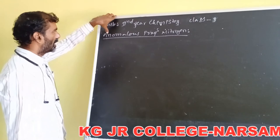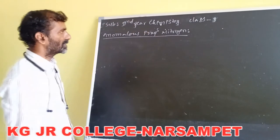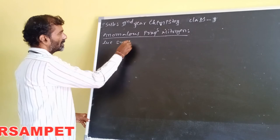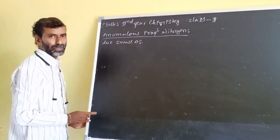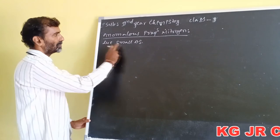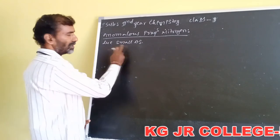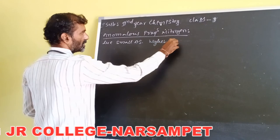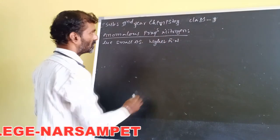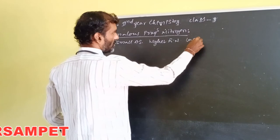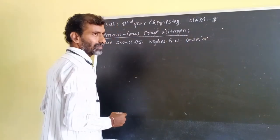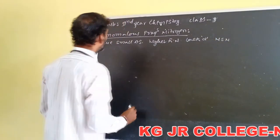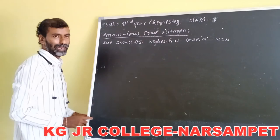Next, anomalous properties of nitrogen. Nitrogen shows anomalous properties due to small atomic size, higher electronegativity, lack of d-orbitals, and tendency to form multiple bonds, that is pi bonds. All these characteristics cause nitrogen to show anomalous properties.